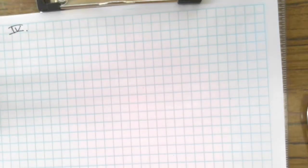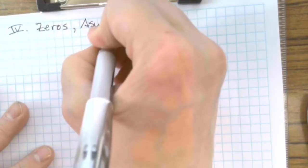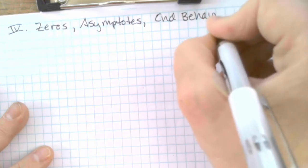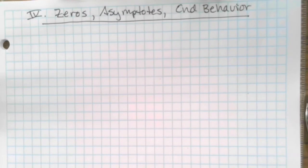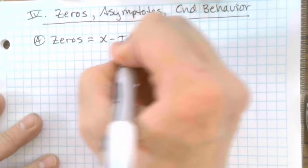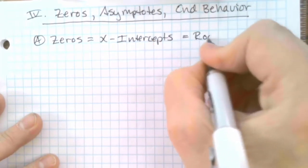We're going to move forward. We're going to do zeros, asymptotes, and end behavior. The zeros of a function are the x-intercepts; we also call them roots. To find a zero, there's going to be an x value and a zero for the y value. What you do is you set the top of the function equal to zero and solve.